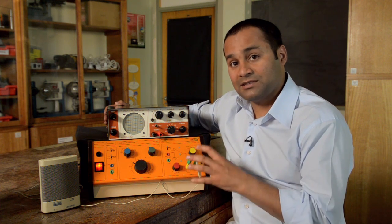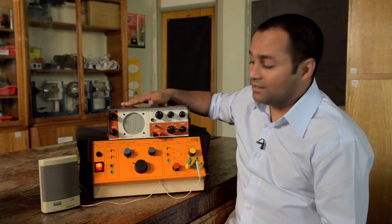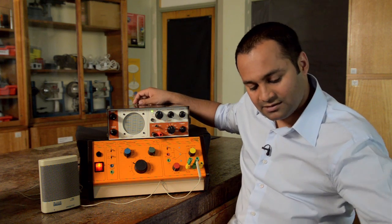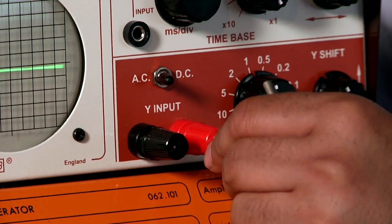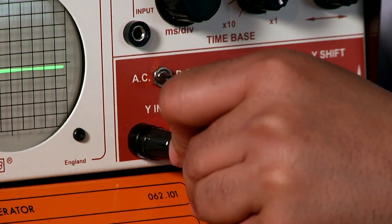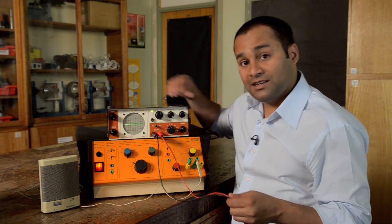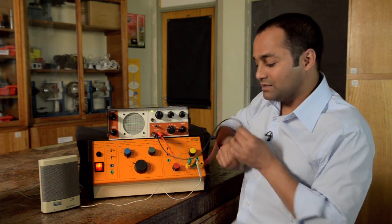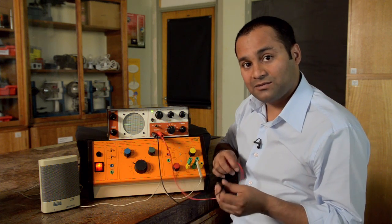Another way of looking at the output from a signal generator is to use an oscilloscope. When you're connecting an oscilloscope, you need to use the high resistance output, and that's clearly marked on this model.